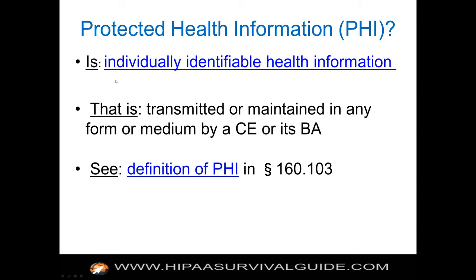What is protected health information? It's individually identifiable health information that is transmitted or maintained in any form or medium by a CE or its BA. The omnibus rule modified the definition: the term health information now means any information, including genetic information, whether oral or recorded in any form or medium, that is created or received by a health care provider and relates to the past, present, or future physical or mental health or condition of an individual. That's quite broad.